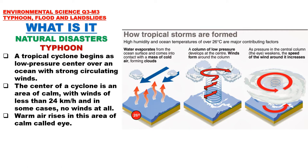We will begin our discussion of Module 3 with natural disasters, starting with typhoon. A tropical cyclone begins as a low-pressure center over an ocean with strong circulating winds. The center of a cyclone is an area of calm with winds of less than 24 km per hour and, in some cases, no winds at all. Warm air rises in this area of calm called the eye.